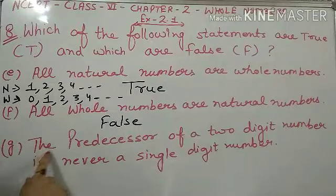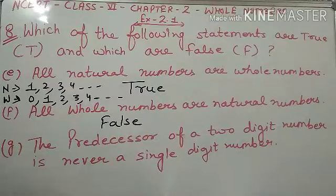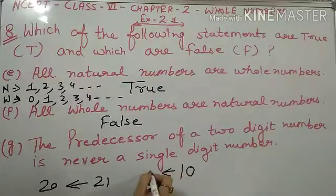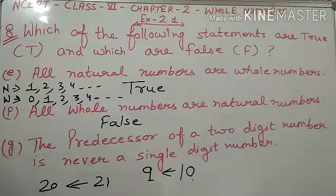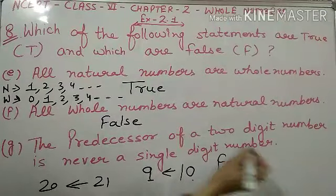Now g part: 'The predecessor of a two digit number is never a single digit number.' Toh dekhi bachoh, ek number ham lete hai — ten. Ten ka predecessor kya hoota hai? Nine hoota hai. Ab ten two digit number hai aur nine one digit number hai. Iska matlab yeh statement false huwa. Ten eek aisa number hai jo two digit hai aur iska predecessor jo nine hai, woh single digit hai. So this statement is false.